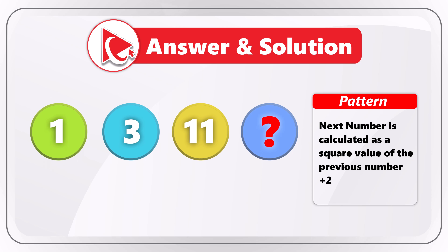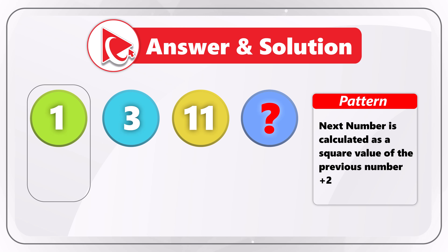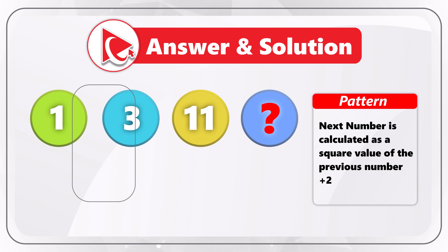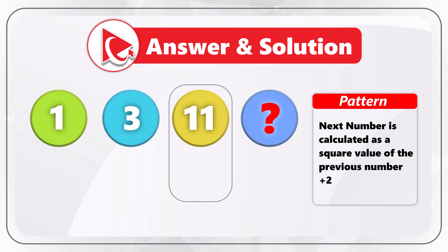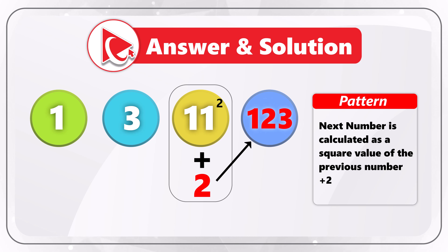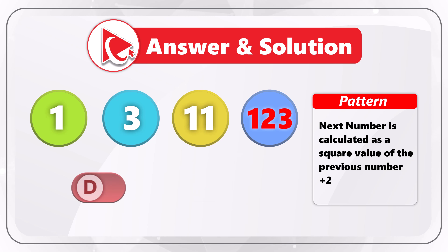Let's look at the example. The first number is 1. 1 squared plus 2 equals 3. Then comes the next number, which is calculated as 3 squared plus 2, which equals 11. So the missing number calculation would be 11 squared, which equals 121, plus 2, which equals 123. So the correct answer here is Choice D: 123.